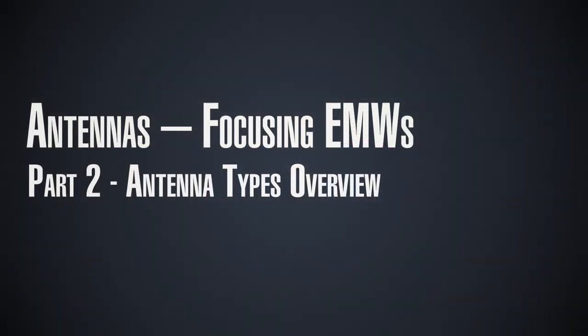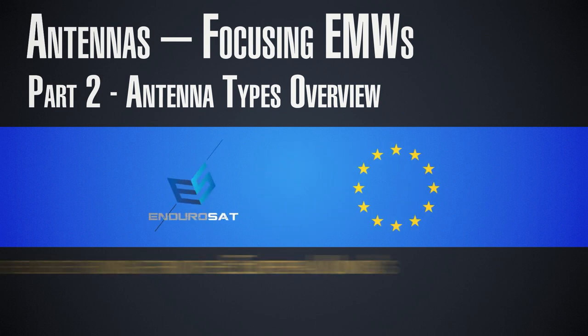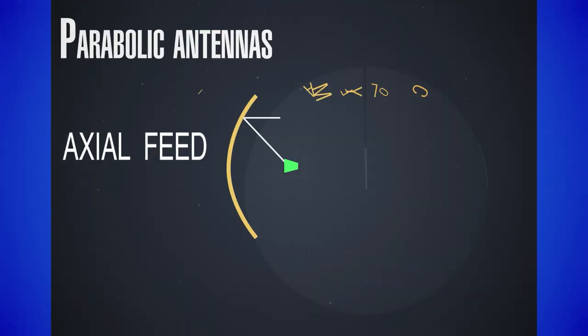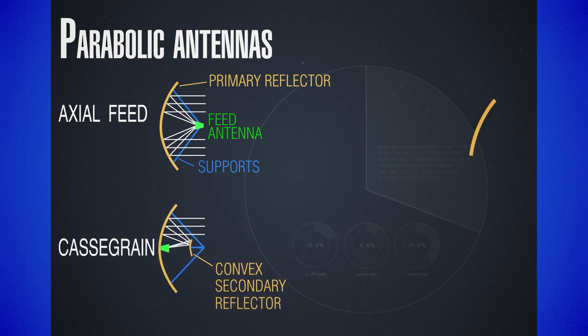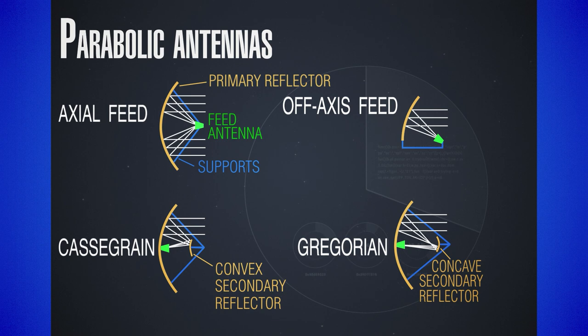Now that we know the main parameters which characterize antennas, let's briefly go through the main antenna types which you will most likely encounter, specifically in the space sector. We already mentioned the property of parabolas to focus geometric rays, but there are many ways to use a parabola to that end. In general, all aperture antennas use parabolas in order to focus, but depending on the amount of reflectors, the position of the feeder, its support, and the focal length used, they are divided into four main types.